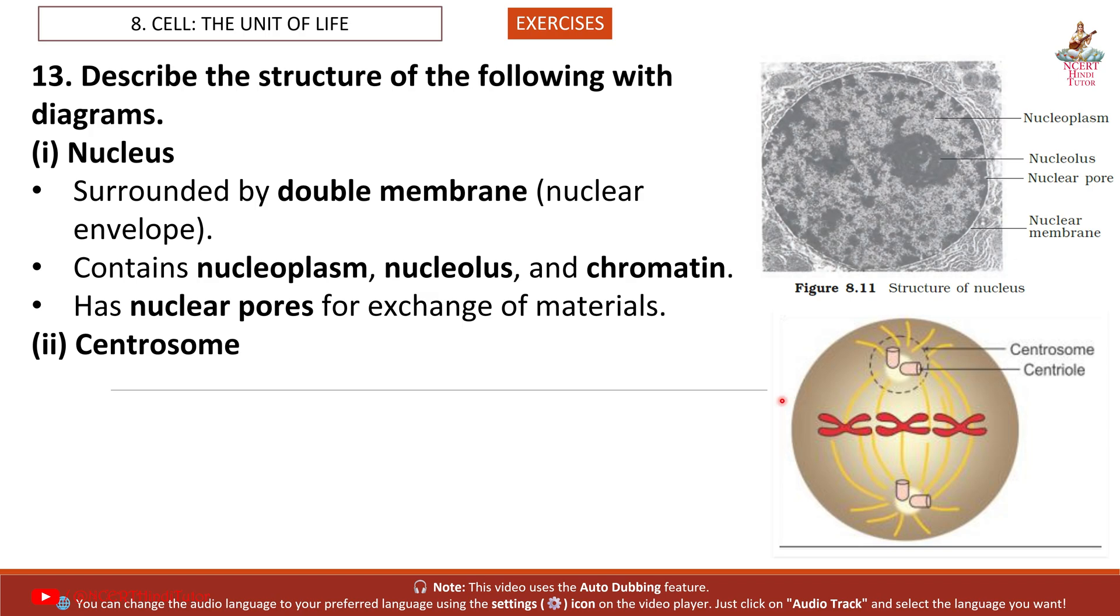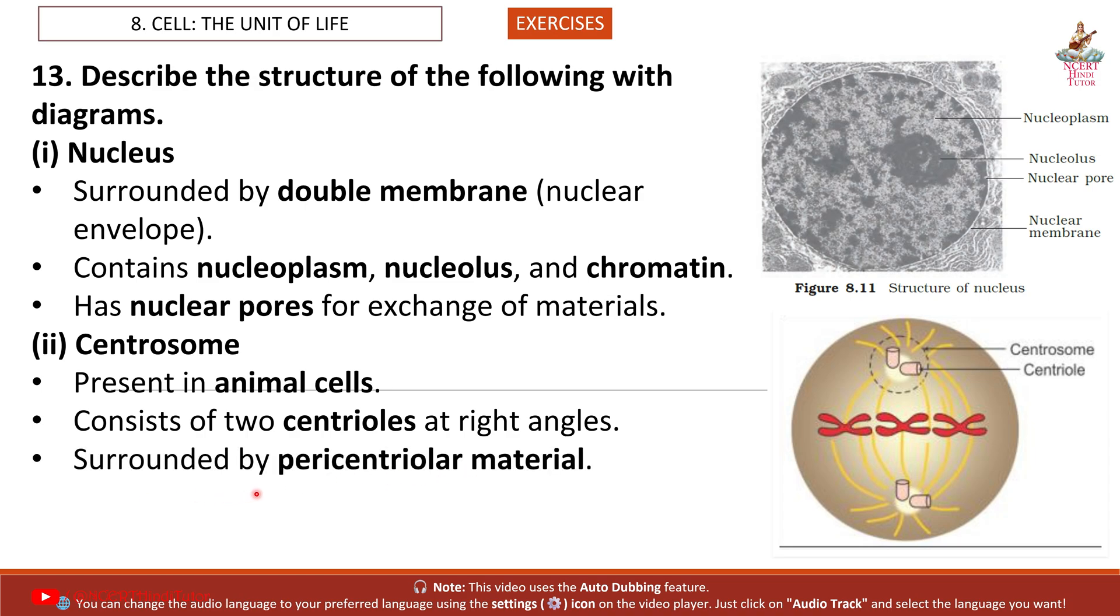2. Centrosome. So friends, this is the diagram. Present in animal cells. Consists of two centrioles at right angles. Surrounded by pericentriolar material. Plays key role in spindle formation during cell division.